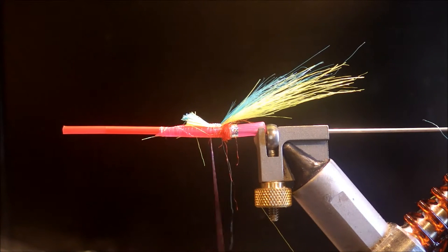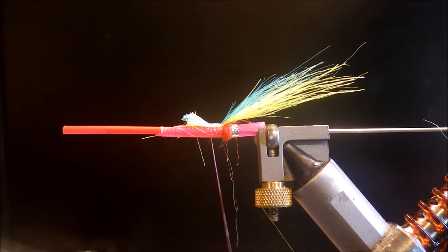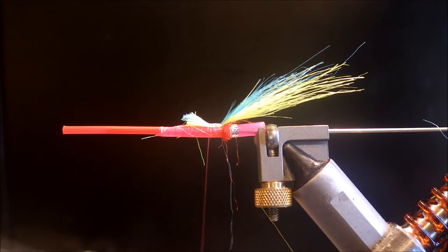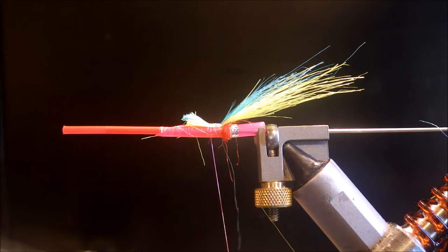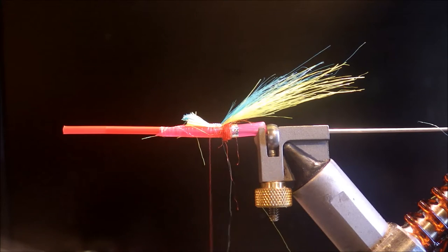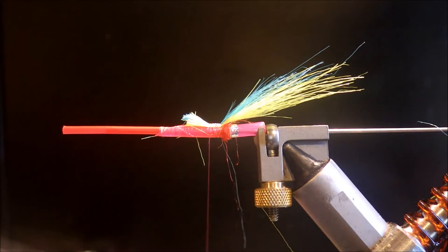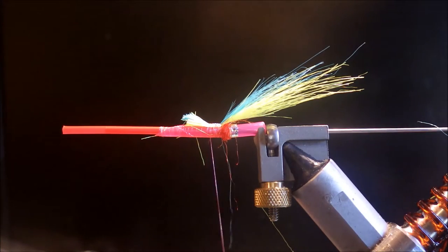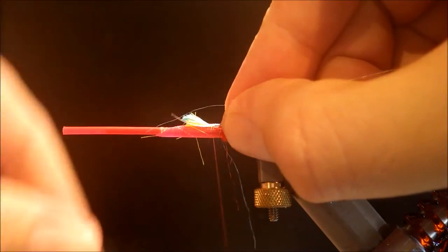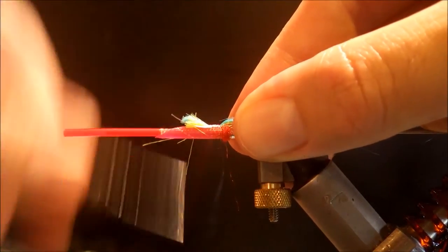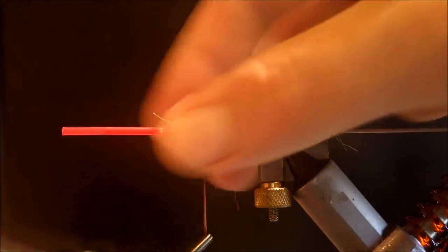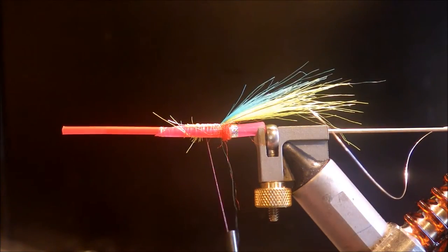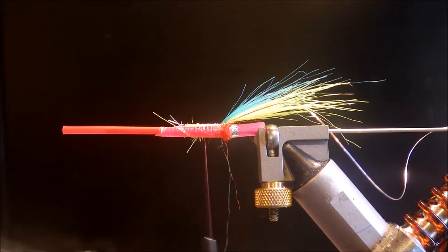Rib is just going to be some oval silver tinsel. You can use wire if you like, it's a bit stronger. But then on the tubes it's not that big an issue anyway. You've got the leader away from the fish's teeth. Catch this in. Tidy everything up.